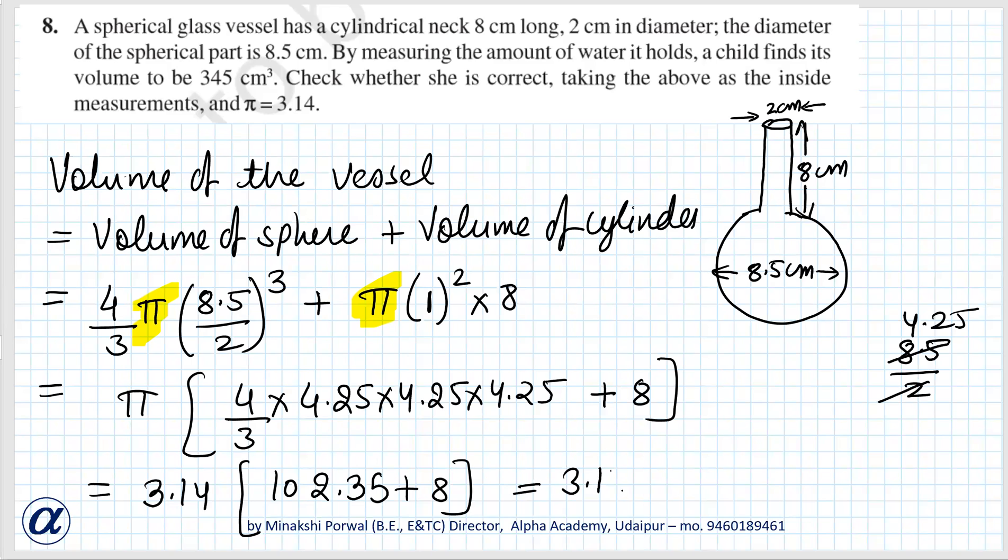That is equal to 3.14 × 110.35. 3.14... it is coming 346.5 cm³.